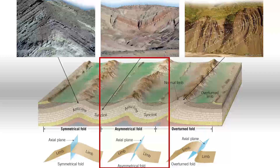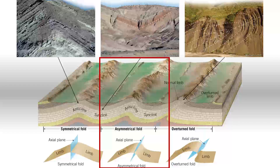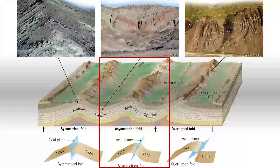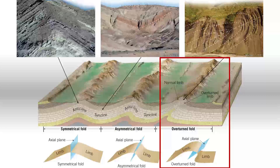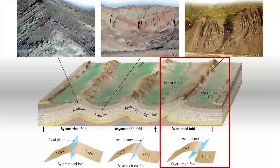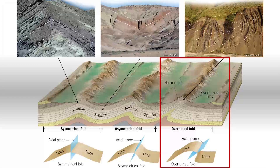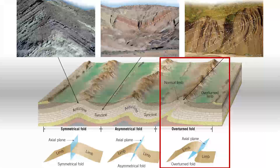The axis line doesn't need to be pushed to the right specifically — it could get pushed to the left. It's just that now we have an axial plane that isn't perfectly perpendicular. And if that unequal stress is really unequal, you can get an overturned fold, where the angles of the limbs are so different the axial plane is almost pushed to the horizontal.